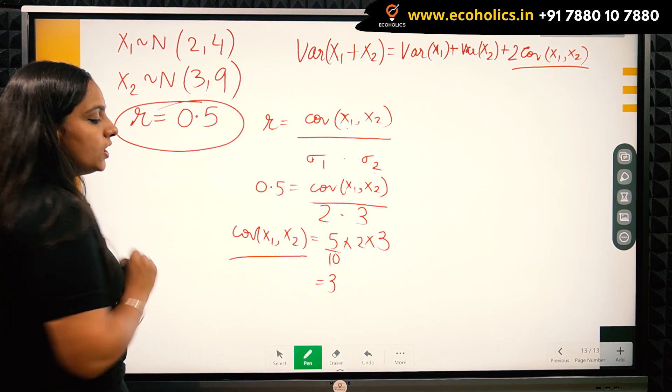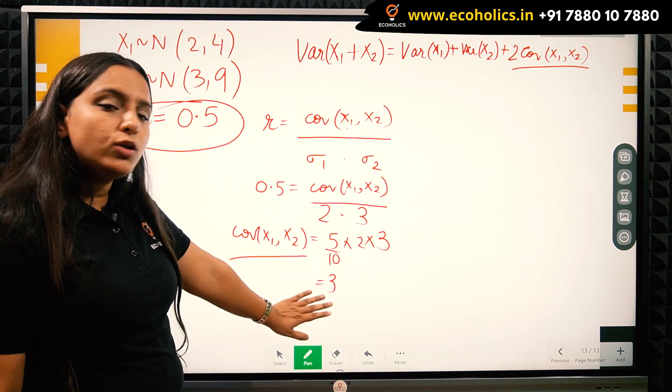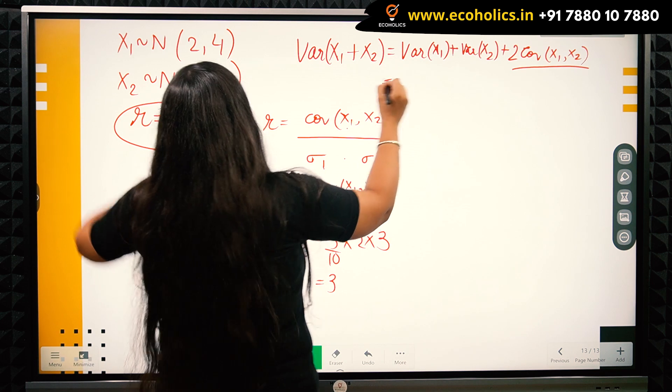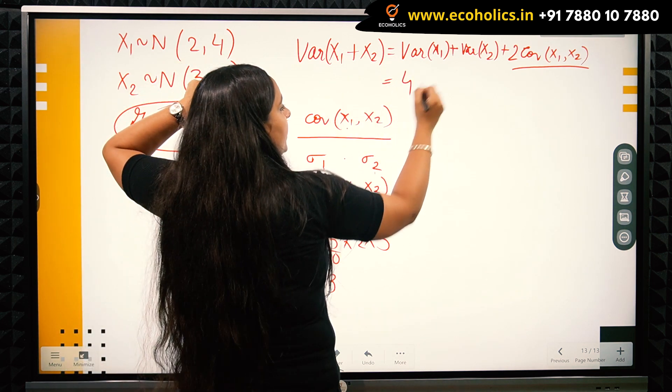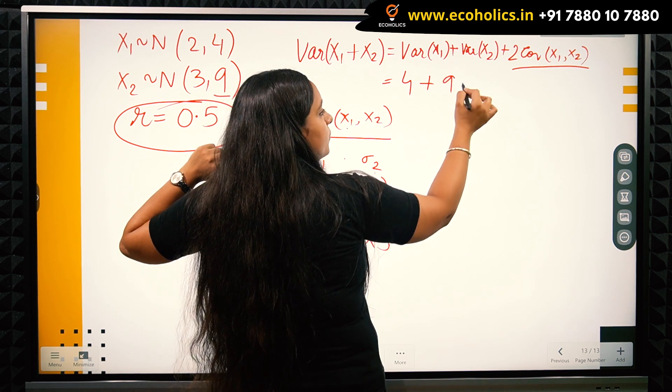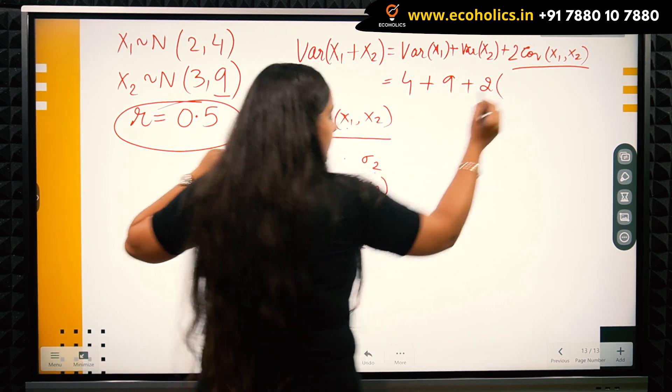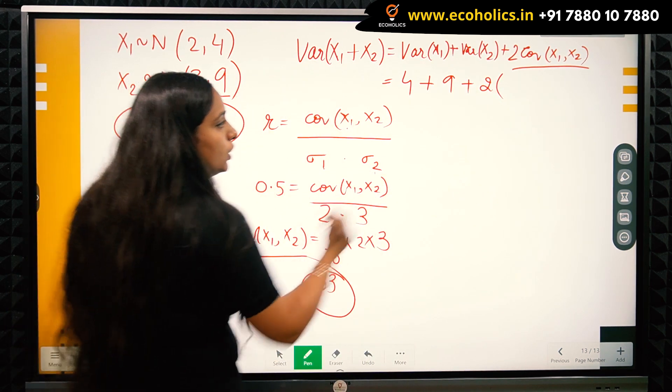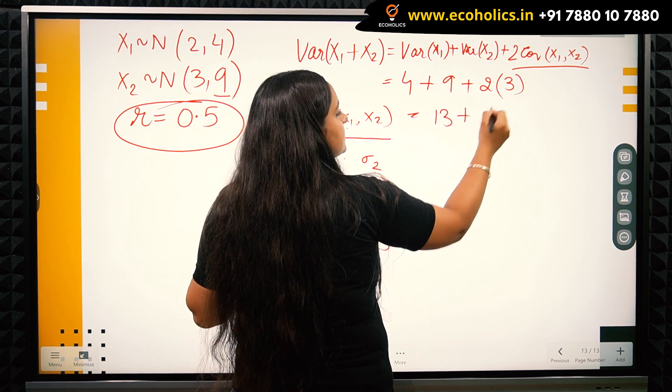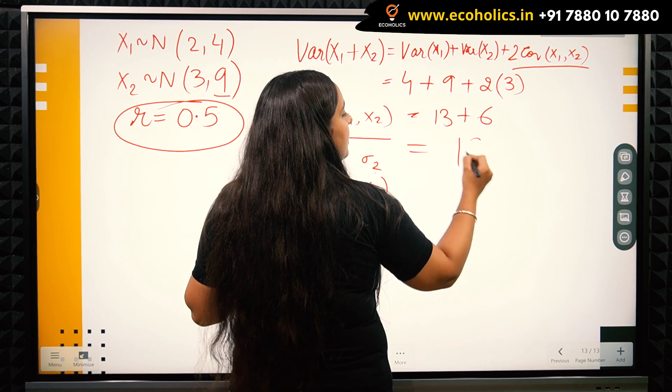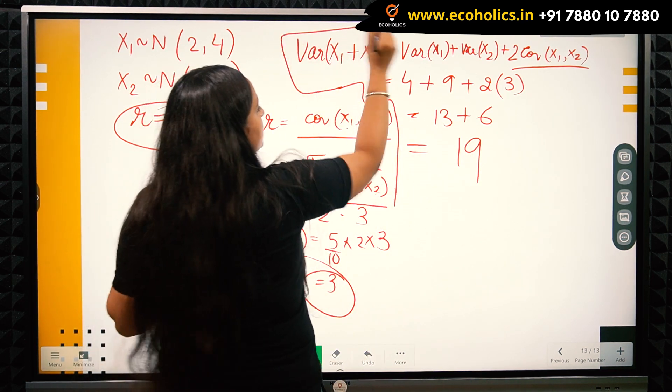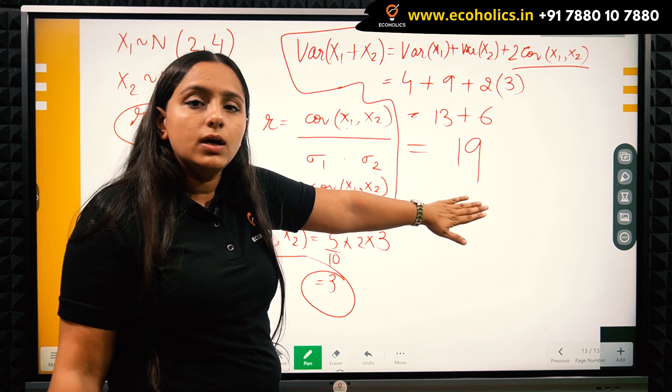Now I can plug in the value of this covariance. Variance of X1 is 4, variance of X2 is 9, and twice the covariance is 2 times 3 equals 6. So I get 4 plus 9 plus 6, which equals 19. The variance of X1 plus X2 is 19.